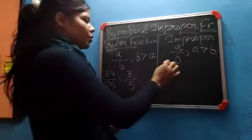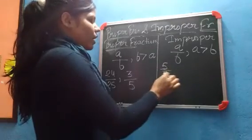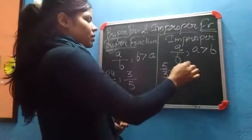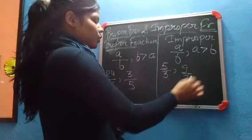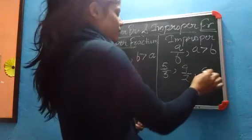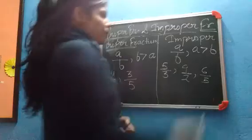Understand what is the example of it? Suppose 5 by 3, 9 by 2, 6 by 5. Understand?